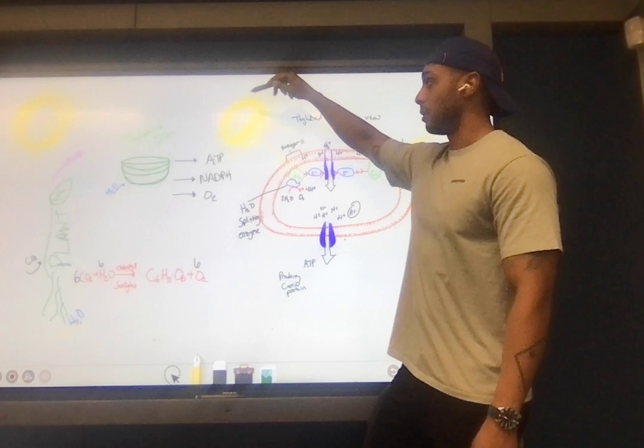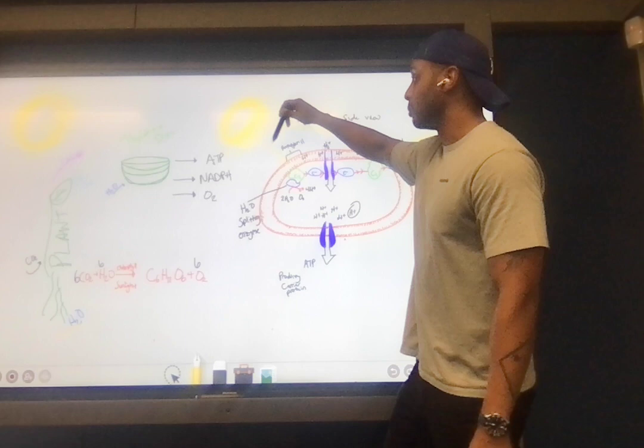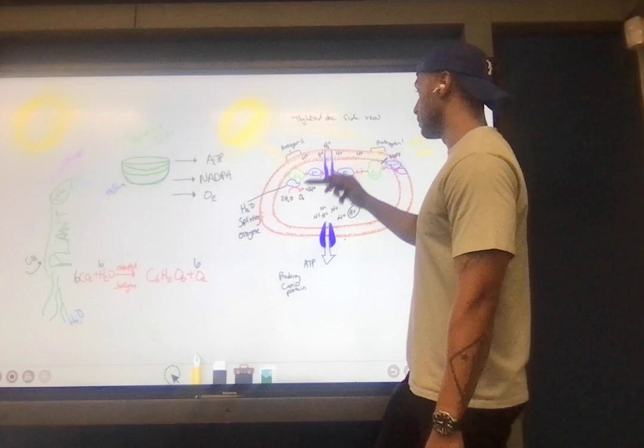Describing photosynthesis at a collegiate level, we have our light source, blob, Bob, orange, big orange blob in the sky. Hitting down, radiating photons. We'll do P for photons. Raining down on our chlorophyll.